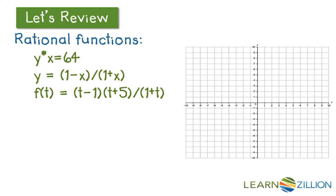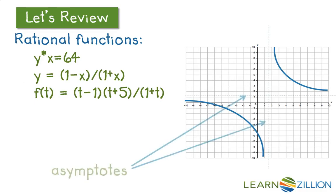What does a rational function look like on a graph? If we were to take one of these rational functions and graph it, we might see a graph that looks like this. It actually has two distinct parts. You'll also notice that there is some space in between — there are limits in the range and domain. We call these asymptotes.